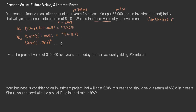If we continue through year three and year four, the fourth year would be $5,000 times 1.065 times 1.065 times 1.065 times 1.065 — or just 1.065 raised to the fourth power. If I take 5,000 times 1.065 to the fourth, I get $6,432.33.